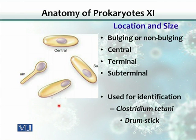The location and size of the spore is also very useful for bacterial identification. The location of the spore could be central, at the very end which is terminal, or sub-terminal. It could also be bulging.